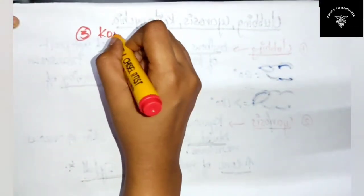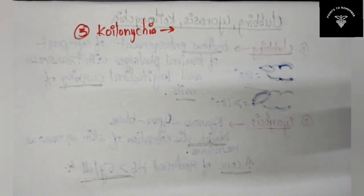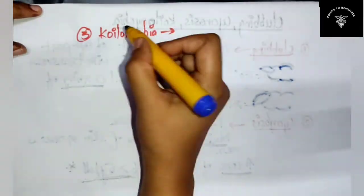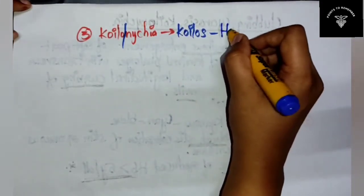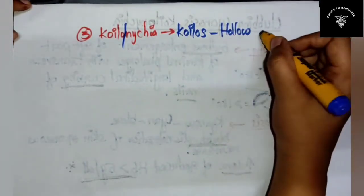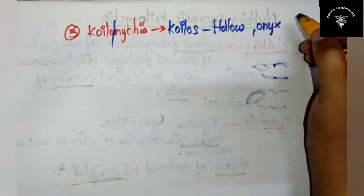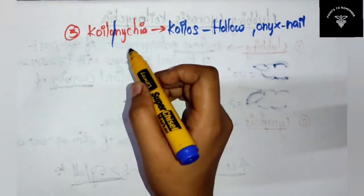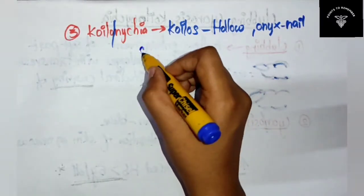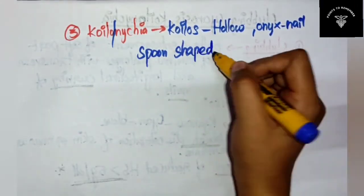The third term is koilonychia. What is koilonychia? Even this term comes from Greek: 'koilos' means hollow, and 'onyx' means nail. Koilonychia is the spoon-shaped nails — you just have to remember that the nails will be spoon-shaped.